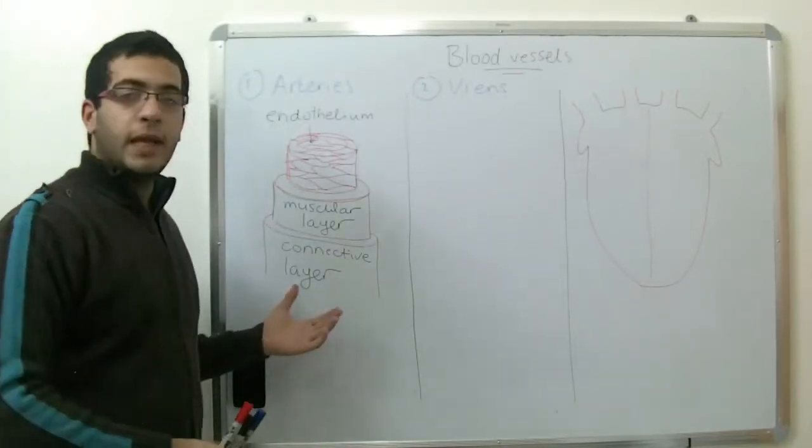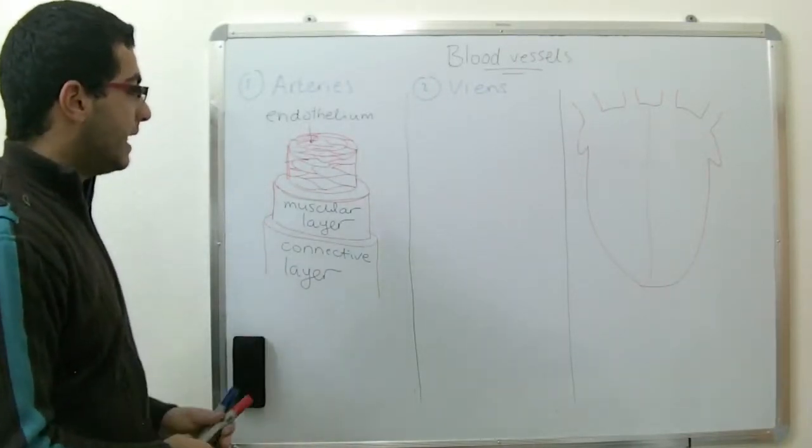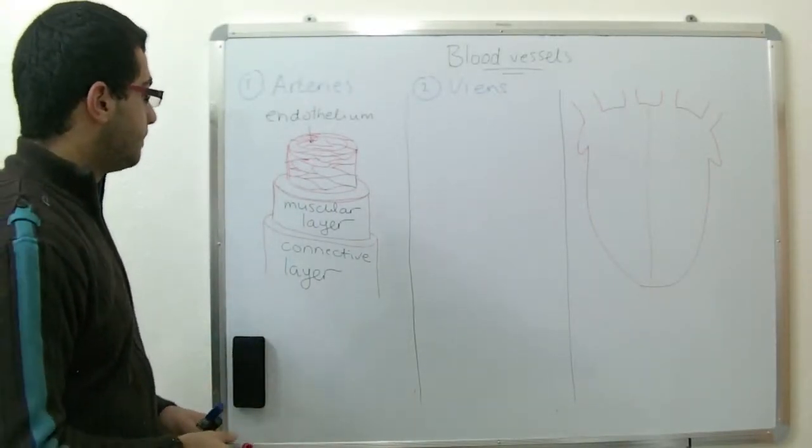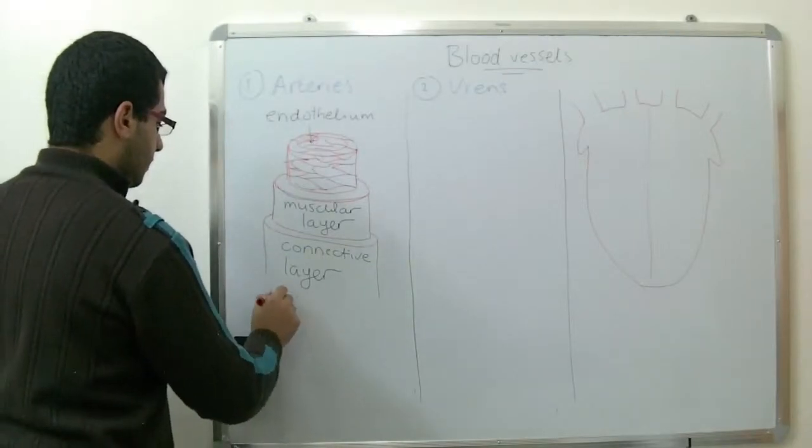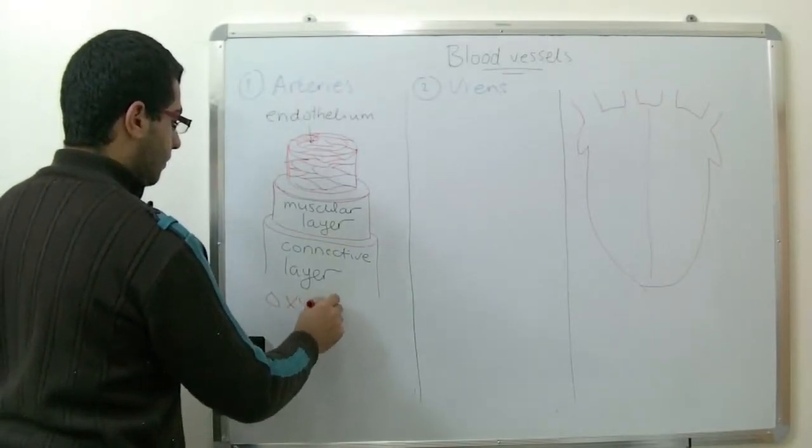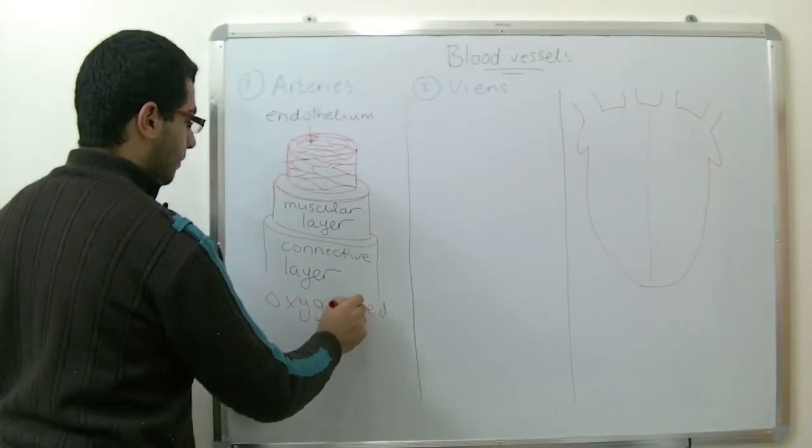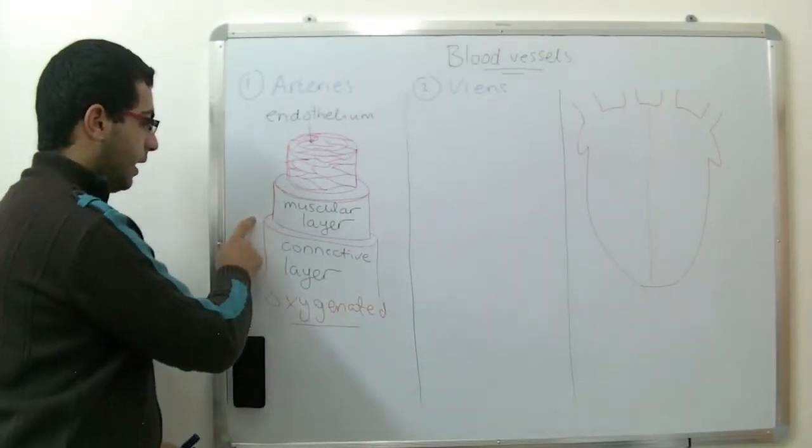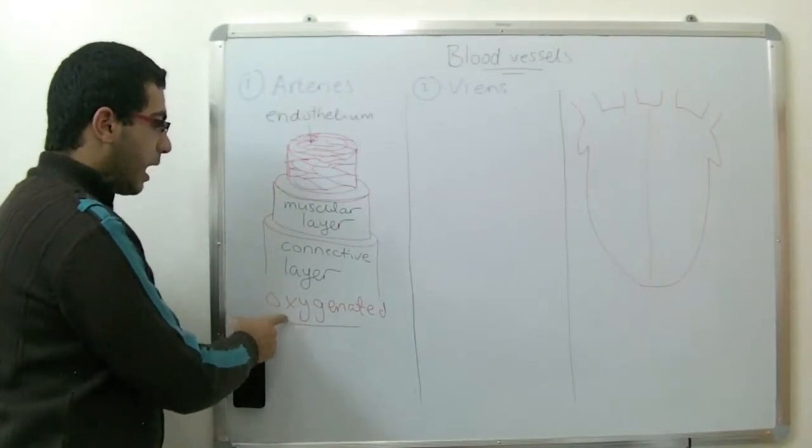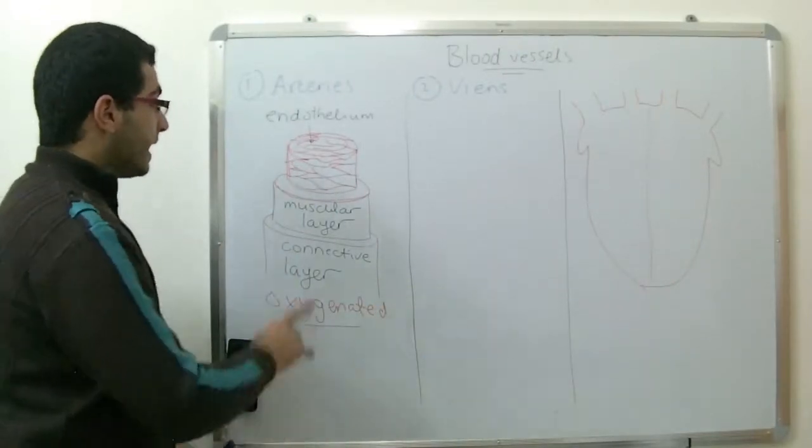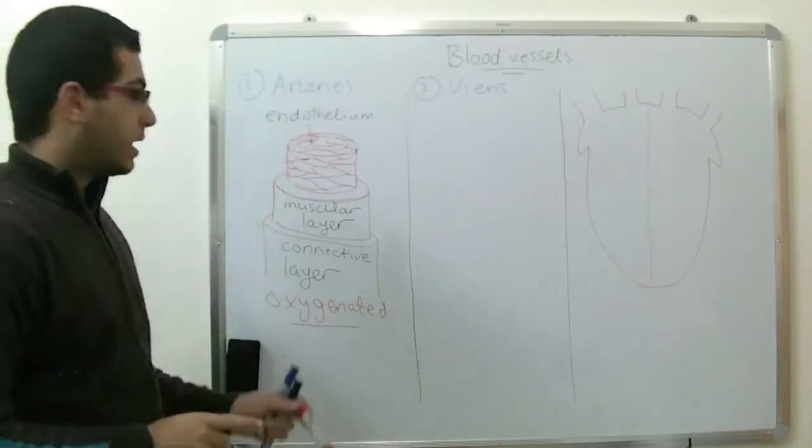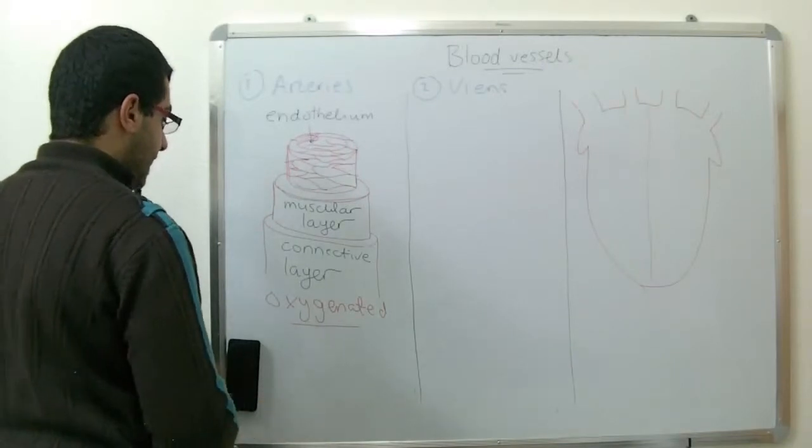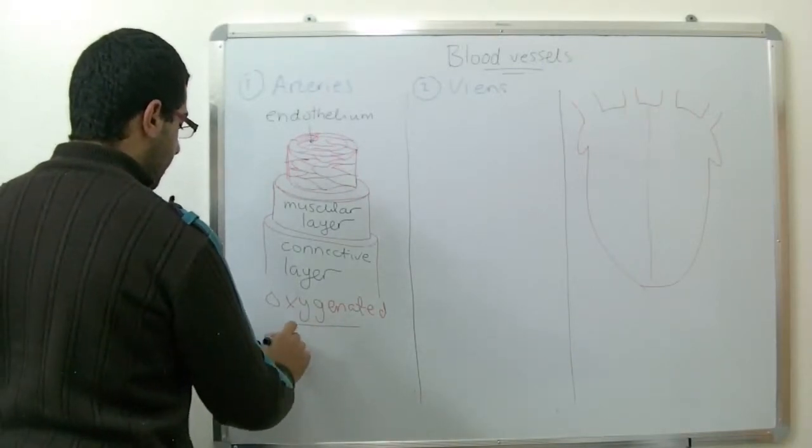The blood which the artery carries is the oxygenated blood. What's meant by the word oxygenated is that the blood that the arteries carry is the blood carrying the oxygen. And we'll know why now. Except only one artery inside the body which carries deoxygenated blood. This artery is the pulmonary artery.